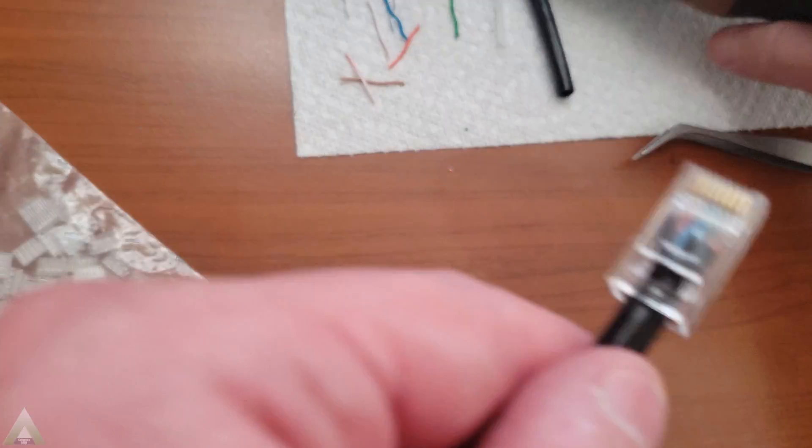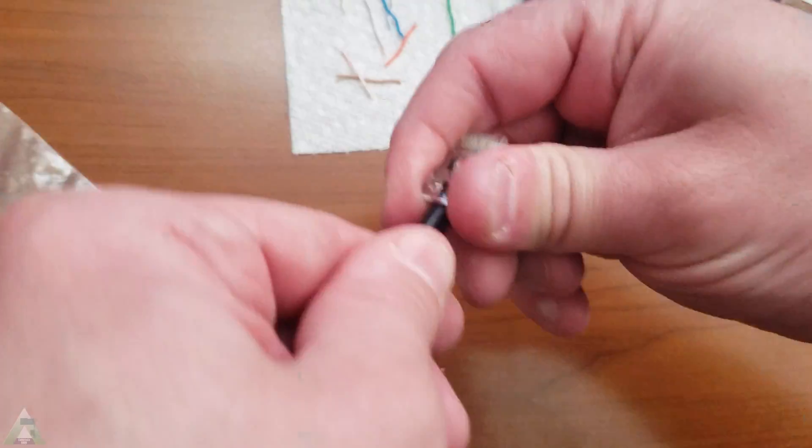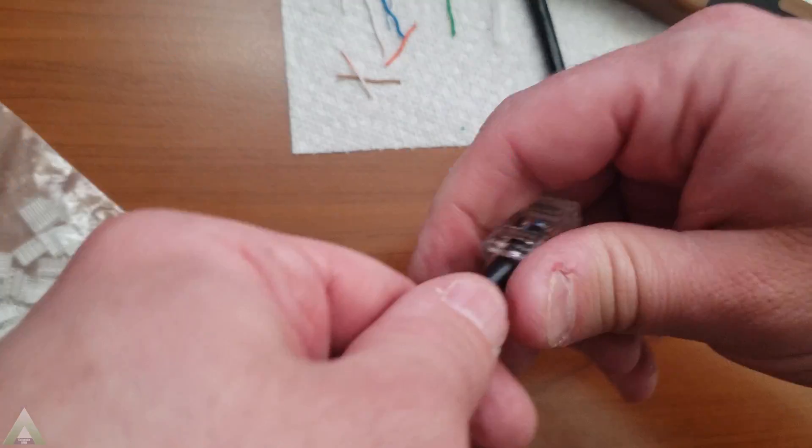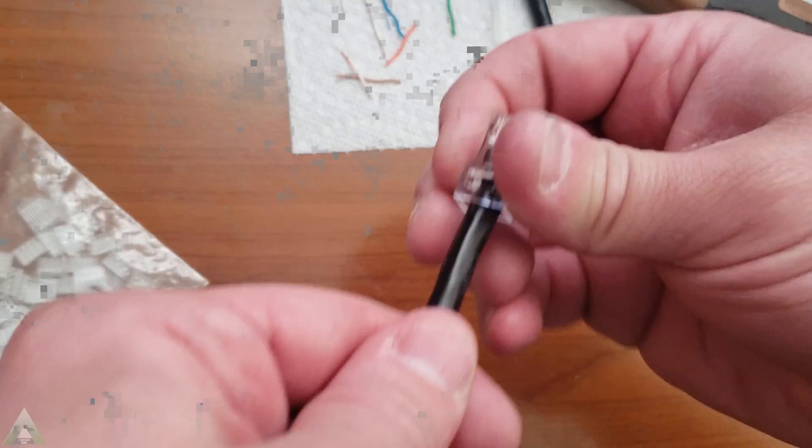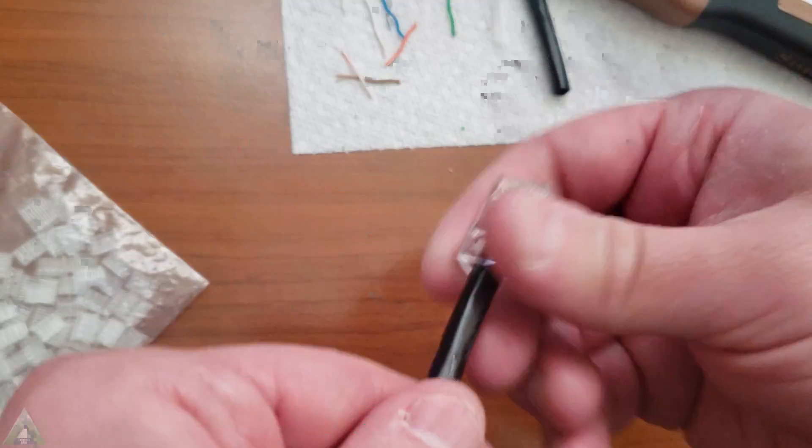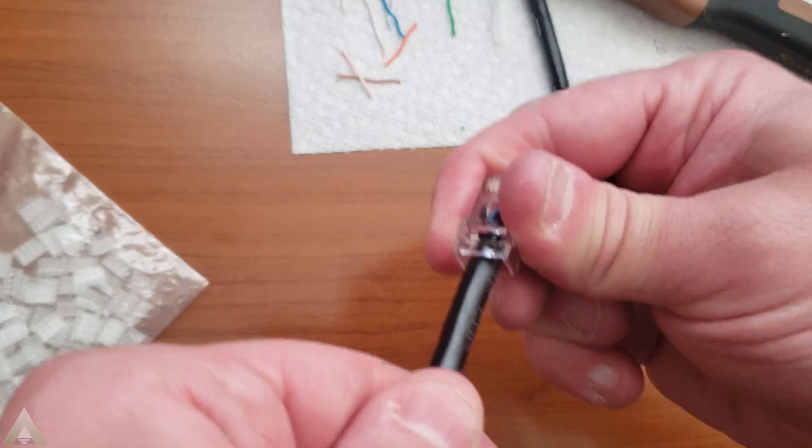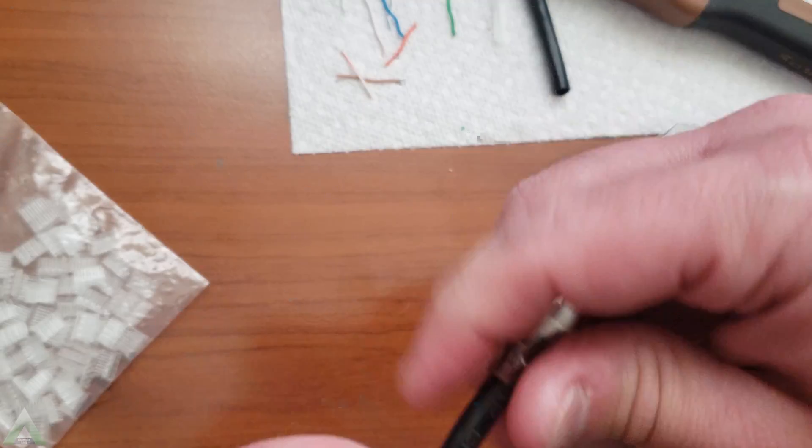At this point, we can go ahead and crimp the connection once we verify that it all looks good. If you're not sure, you can do it a couple of times. I like to do it a couple times to make sure we have a good connection. When you pull this, don't go crazy, but you should be able to pull it and not feel any give. It should be a good solid cable. We have a good connection here.